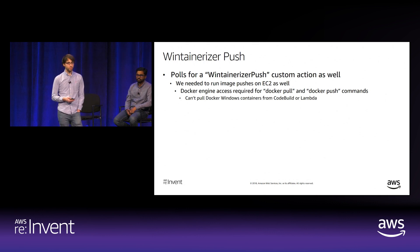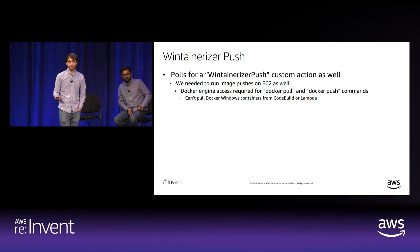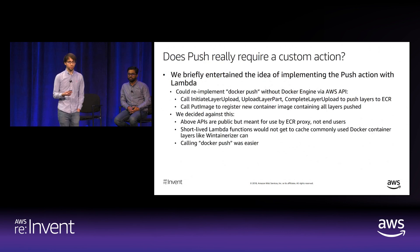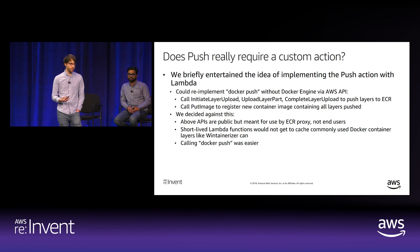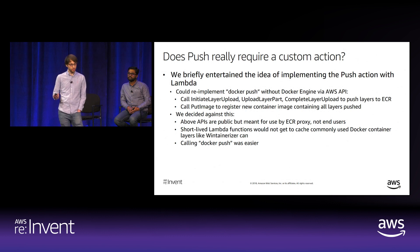The WinTainerizer also implements WinTainerizerPush, because the docker push command requires access to the Docker engine and therefore can't be called from CodeBuild or Lambda for Windows containers. We briefly considered reimplementing docker push using ECR layer management APIs in Lambda without the Docker engine, but rejected this: those APIs are meant for ECR proxies, not end users; Lambda executions are short-lived so there's no layer caching; and Windows container images are 5 to 11 gigabytes with many shared layers where caching is critical.